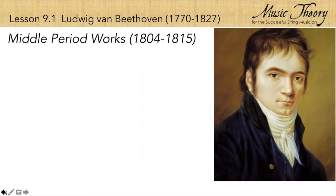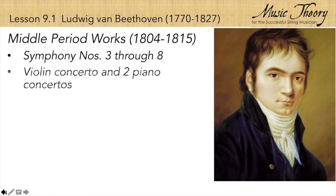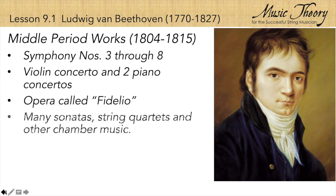Over the next 11 years, Beethoven was extremely creative and productive during a period known as his middle period. During this time, he composed symphonies three through eight, a violin concerto, two piano concertos, an opera, and many sonatas, string quartets, and other chamber music.